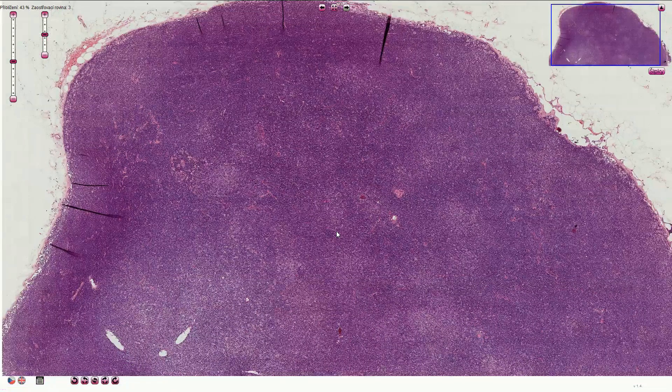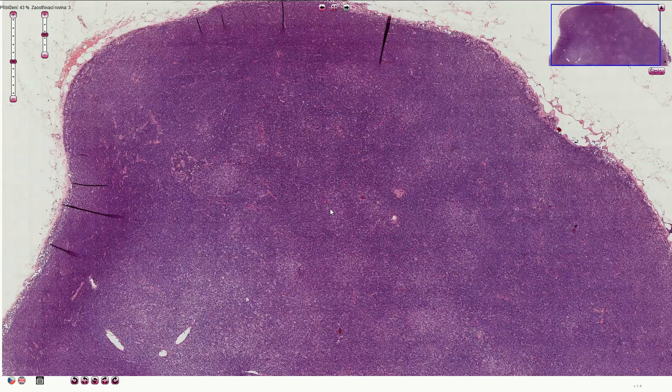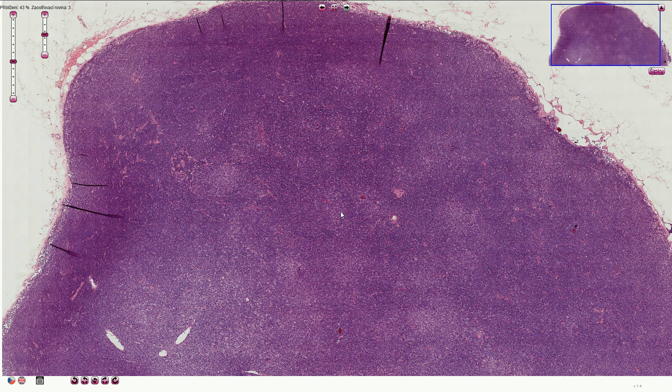Here we have a lymph node which looks quite abnormal. We don't see normal lymphatic follicles with sharply outlined and polarized germinal centers, and the overall architecture is effaced with diffuse, vaguely nodular infiltrate.